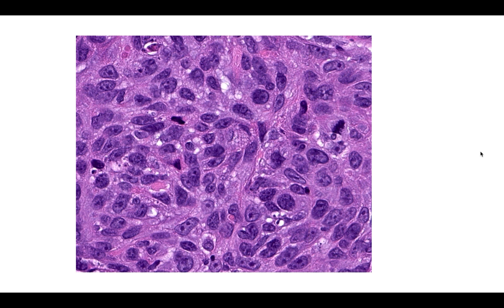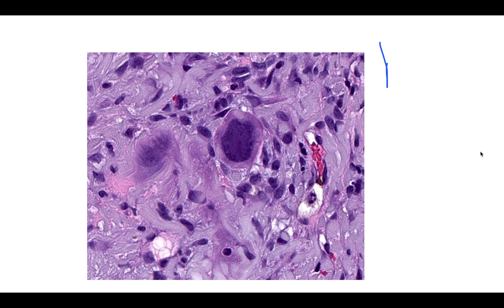Moderately differentiated squamous cell carcinoma can be identified because there is a little bit of individual cell keratinization and intracellular bridges are present. Intracellular bridges are characteristic of squamous cells — two squamous cells adhere to each other with the help of bridges, and sometimes in the microscopy you can see the presence of bridges between the cells. These intracellular bridges are a characteristic feature of squamous cell carcinoma.